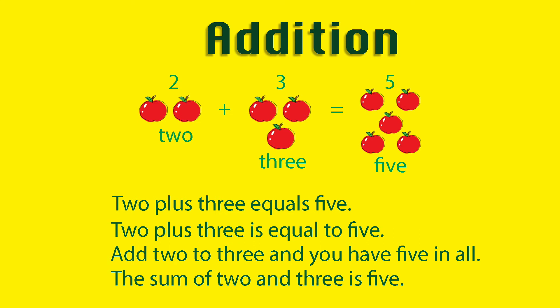This is an example of an addition equation. 2 plus 3 equals 5. 2 plus 3 is equal to 5. Add 2 to 3 and you have 5 in all. The sum of 2 and 3 is 5. These are all different ways to say the mathematical equation above.